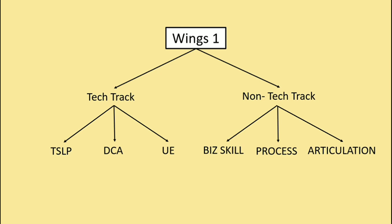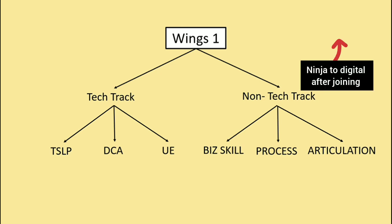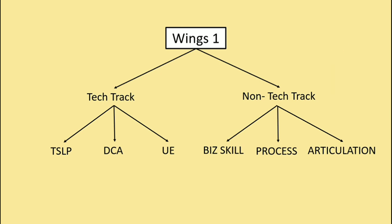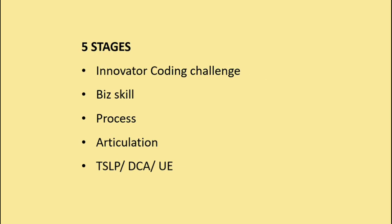The Non-Tech Track consists of Business Skill, Process, and Articulation. So Wings 1 consists of a mix of the Tech Track and the Non-Tech Track. If you are a Ninja candidate, I have already posted a video on how to upgrade from Ninja to Digital after joining. Also, a common question is whether this Innovator exam takes place before joining — no, this Innovator exam will be conducted once after you join TCS.